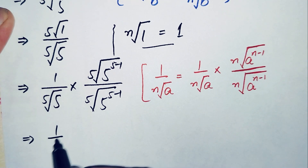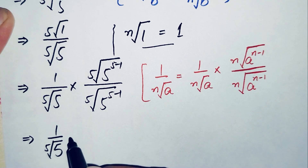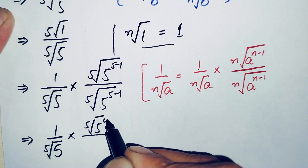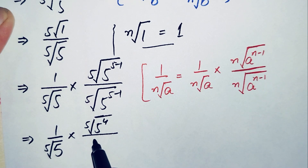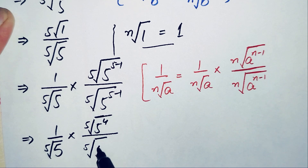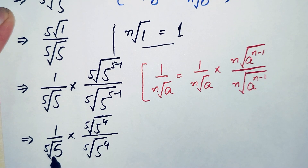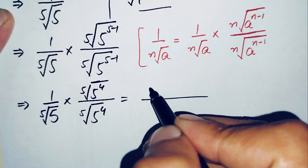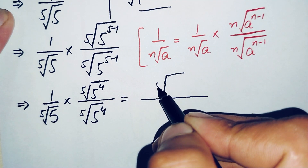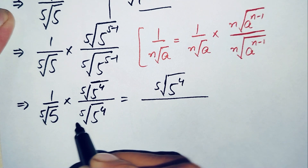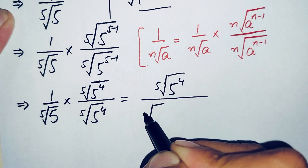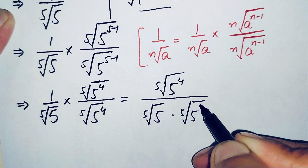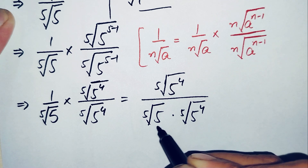This implies: 1 divided by the fifth root of 5, times the fifth root of 5 raised to power 4 (since 5 minus 1 equals 4), divided by the fifth root of 5 raised to power 4. Multiplying numerator by numerator, we get the fifth root of 5 raised to power 4. In the denominator, we multiply the fifth root of 5 times the fifth root of 5 raised to power 4.